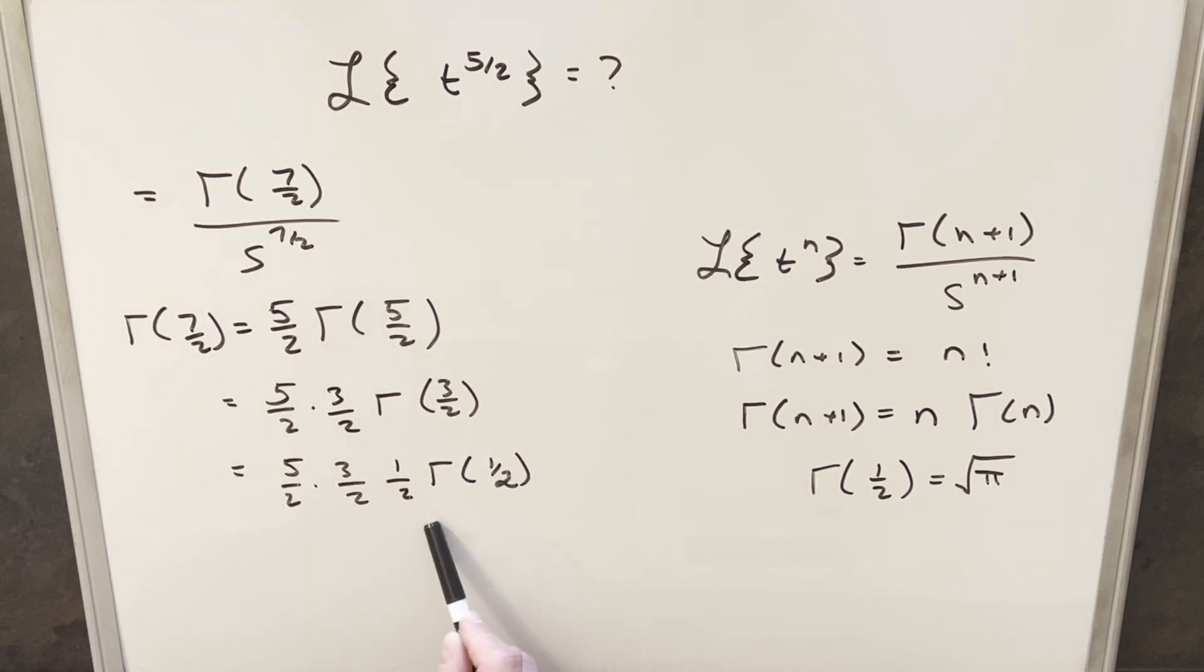Now some people like to create a formula for this because it always works the same way, where you can write this in terms like a double factorial. But once you've done this a few times, it just starts to go quick.